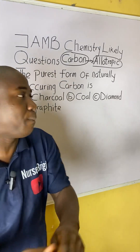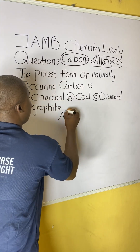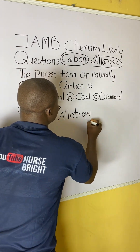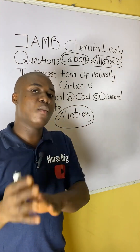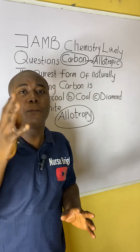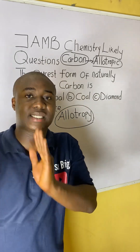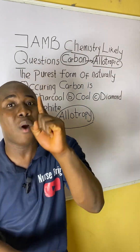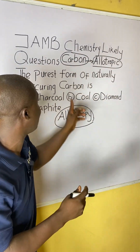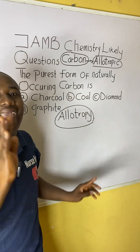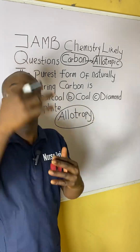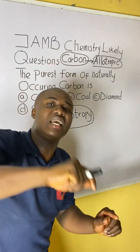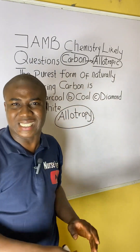The word allotropic came from another word called allotropy. What is allotropy? It must be noted here that allotropy is the existence of an element — one particular element; in this case, the element is carbon — in more than one form in the same physical state.